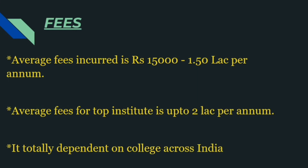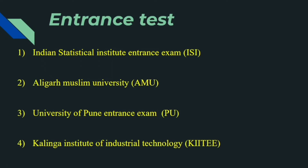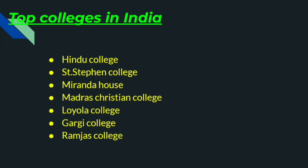The next topic is entrance tests to get into top institutes. The first entrance test is the Indian Statistical Institute Entrance Exam, known as ISI. The second is Aligarh Muslim University (AMU). The third is the University of Pune Entrance Exam (PU). And the fourth is KIIT — Kalinga Institute of Industrial Technology. When you clear these exams, you will get into the institute based on the marks you have scored.